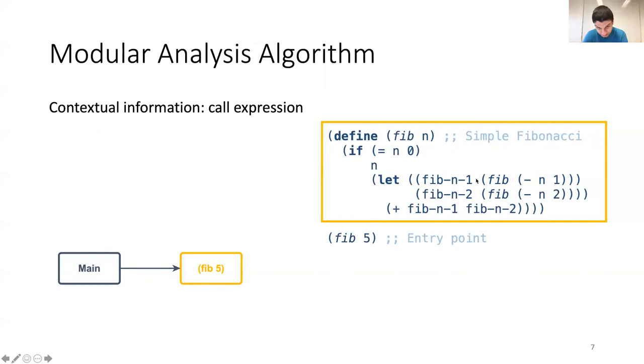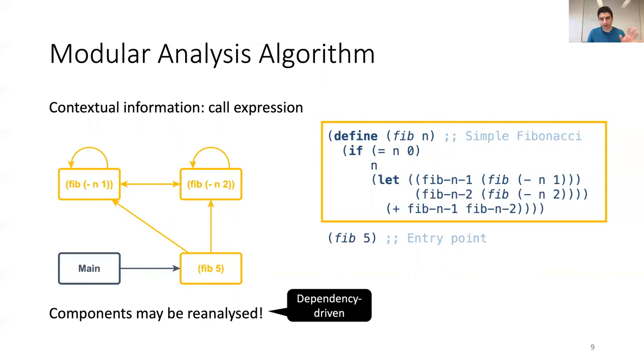But, as these calls are at a different call site, and in this example, this call site is used as contextual information, two more components are found. So, importantly, a component can be analyzed multiple times. For example, if the return value of this component, fib n-1, is updated, then the two dependent components here on the right need to be re-analyzed to take into account this return value. And therefore, a modular analysis is actually dependency-driven.